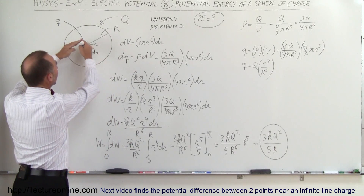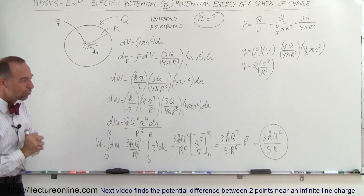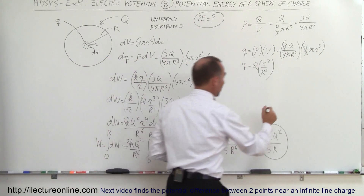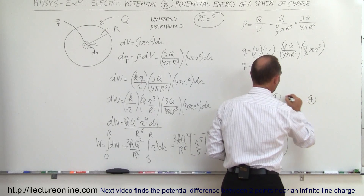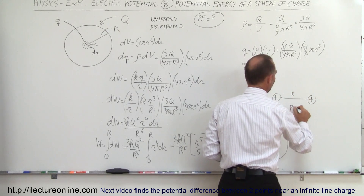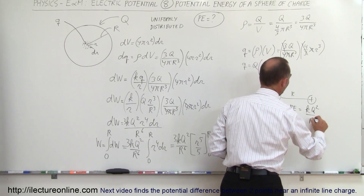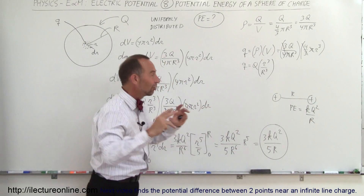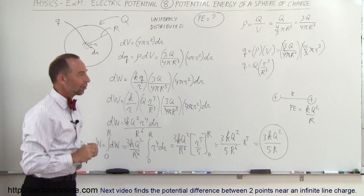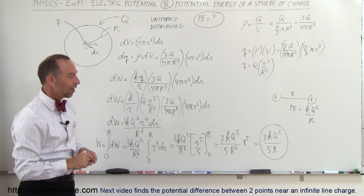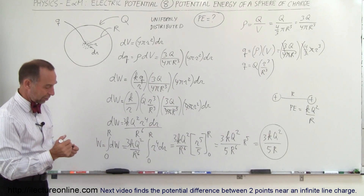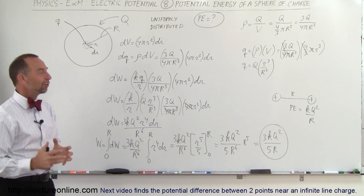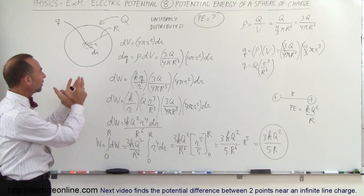That is the total energy stored in a sphere of radius R containing total charge Q: W = (3/5)(kQ²/R). Interestingly, compare this to the potential energy of two point charges separated by distance R, which is kQ²/R. Our result is the same form but multiplied by 3/5, because the charge is distributed evenly throughout the sphere rather than concentrated at a point.